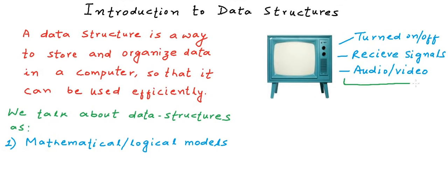So this is an abstract view. So when we study data structures as mathematical or logical models, we just define their abstract view, or in other words, we have a term for this, we define them as abstract data types.